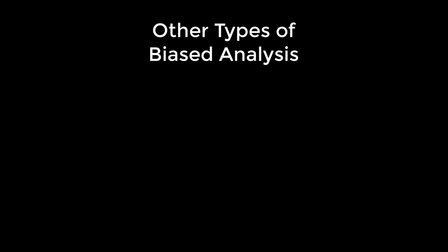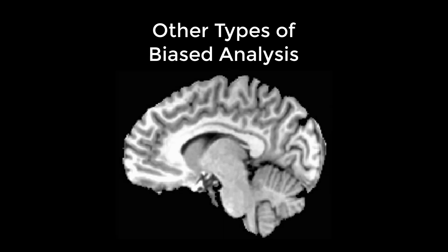We've only touched on a couple of different ways to do biased analysis, but there are other ways too, and you need to be on the lookout for them. Let's say that you use an anterior cingulate cortex ROI for your confirmatory analysis — meaning that you selected the ROI beforehand regardless of what the whole-brain results look like — but the results don't pass correction. You then look at the whole-brain map and decide to use an ROI located more in the pre-SMA. This is also a biased analysis, because now you know where your effect is before you decide where to extract from.